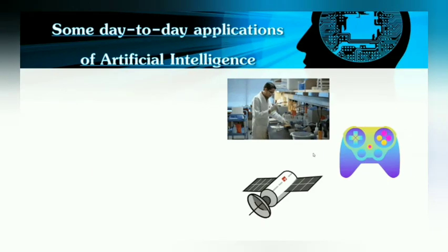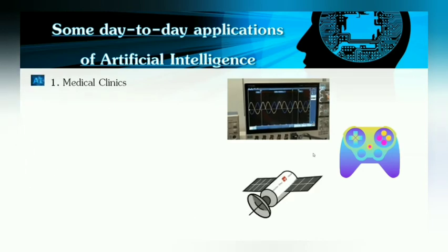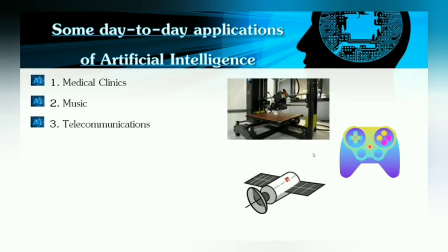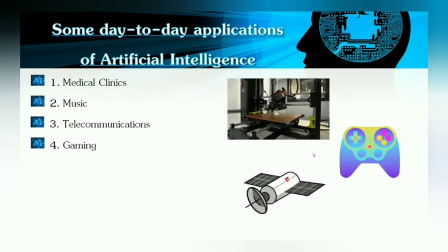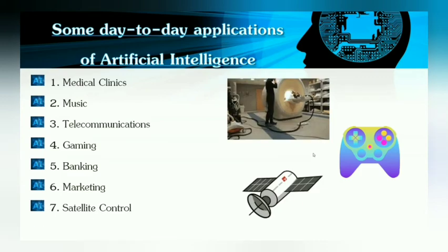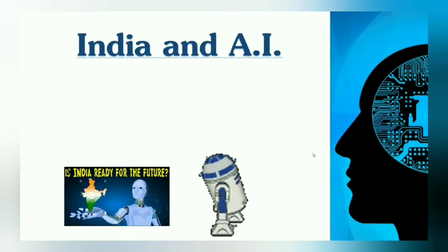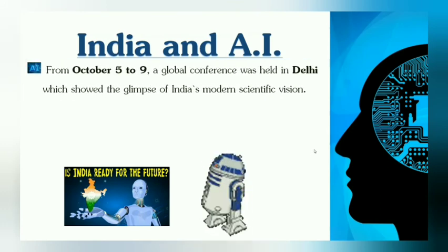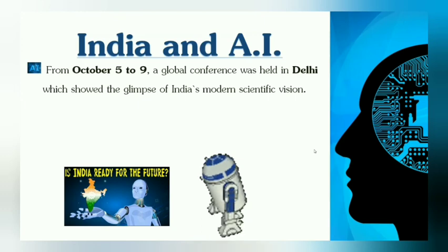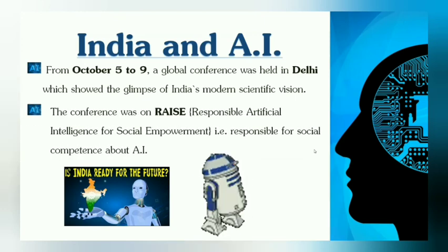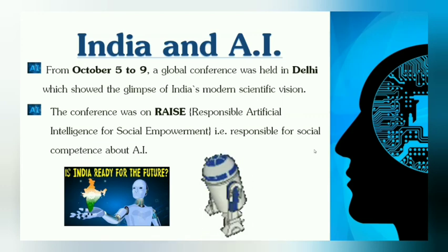Day-to-day applications of artificial intelligence include: medical clinics, music, telecommunications, gaming, banking, marketing, and satellite control. Regarding India and AI, from October 5 to 9, a global conference was held in Delhi which showed the glimpse of India's modern scientific vision. The conference was RACE — Responsible Artificial Intelligence for Social Empowerment — responsible for social competence of India and the world about AI.